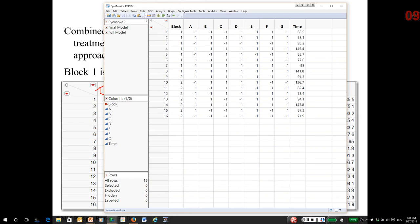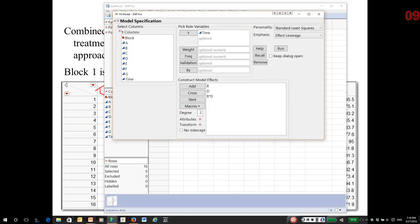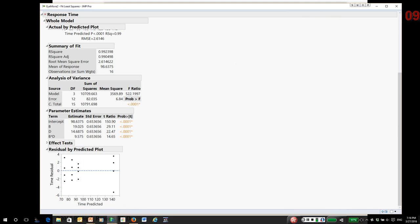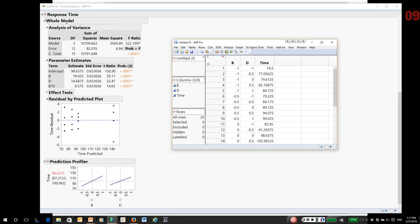So, what I would do is just go back to fit model. And I would pick B and D and fit a full factorial model. Time is the response. And at this point, we could do things like use the profiler to understand the relationship between time to acquire target. In fact, we'll just do that.